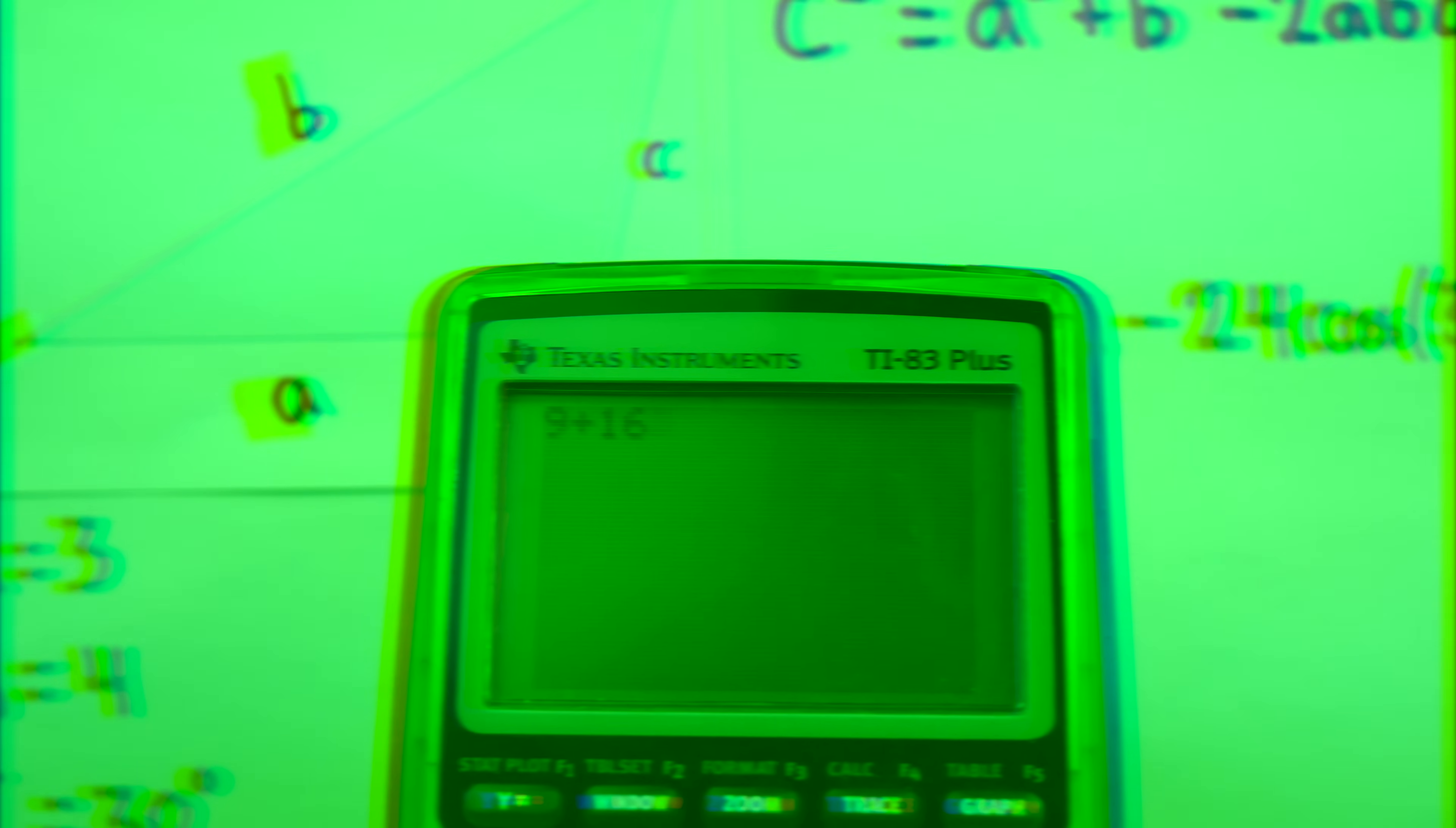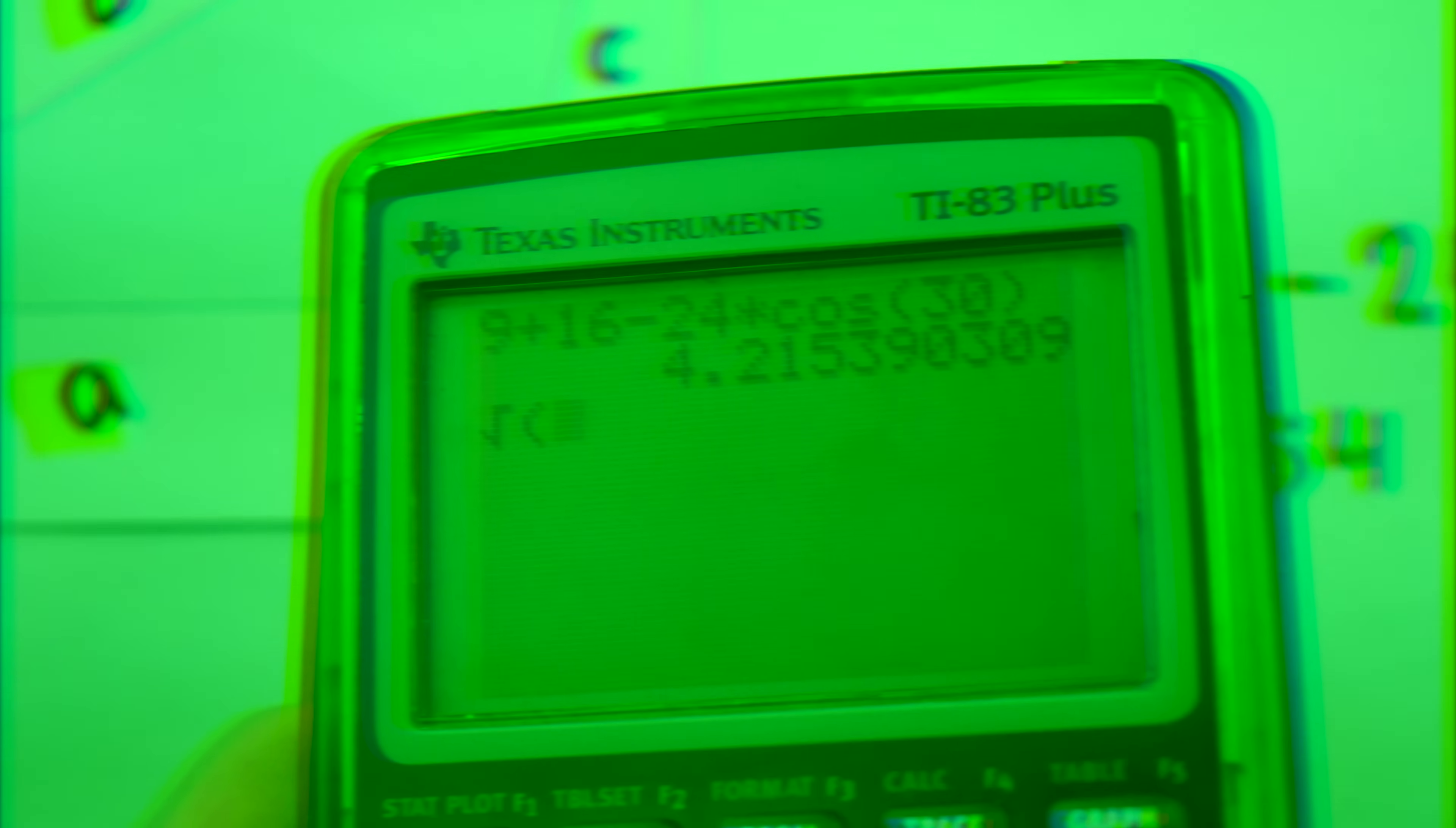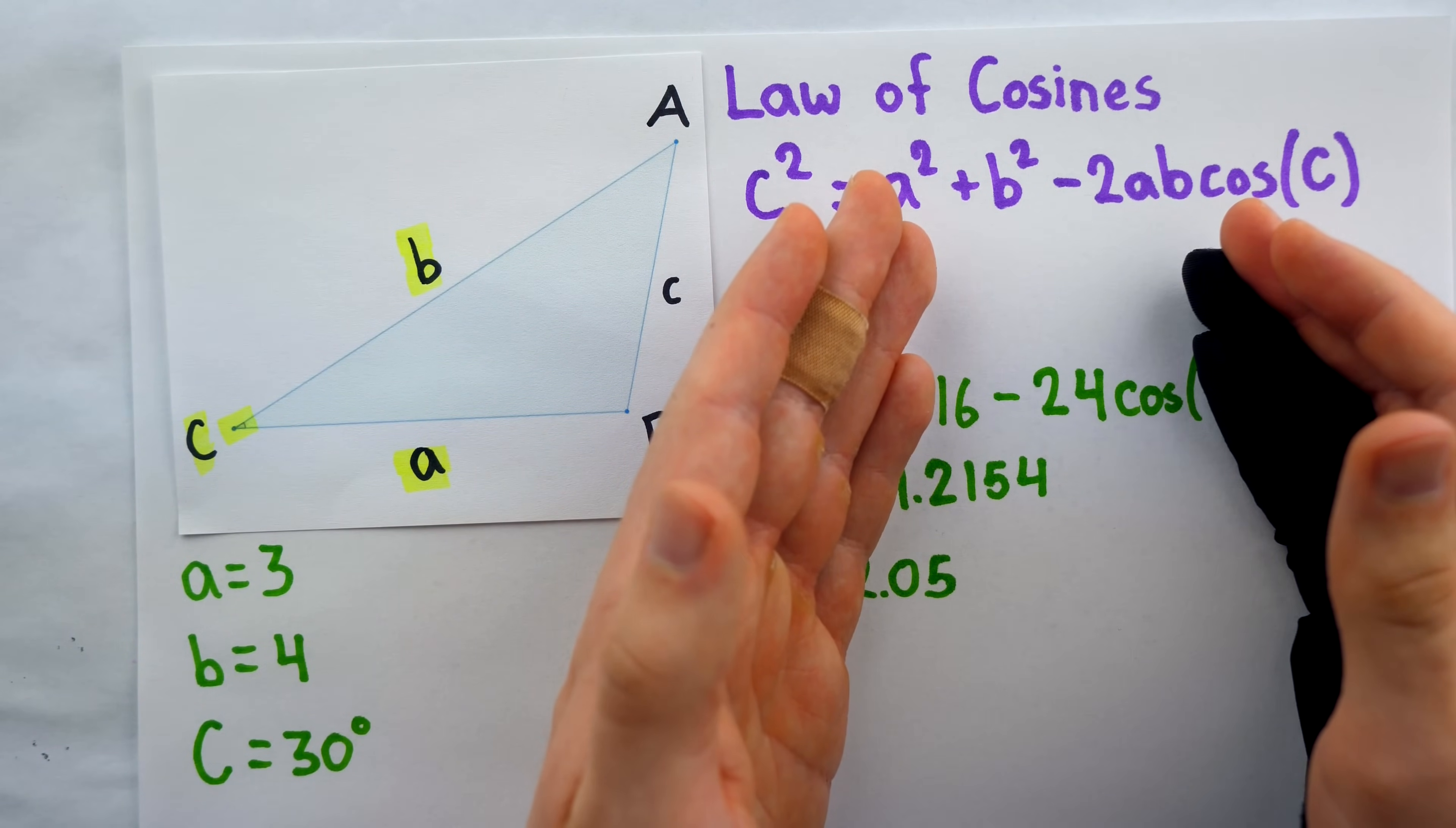In this example, we know the lengths of a and b. Let's say the length of a is 3, and the length of b is 4. And we also know the measure of their included angle. Let's say that the measure of that angle, C, is 30 degrees. That's an acute angle. We absolutely can't use the Pythagorean theorem here to find the length of this side, but the law of cosines will help us solve this triangle in short order.